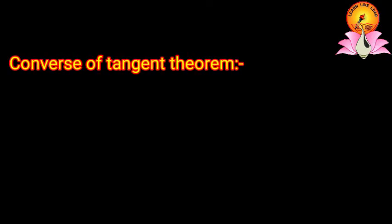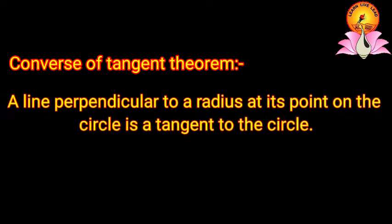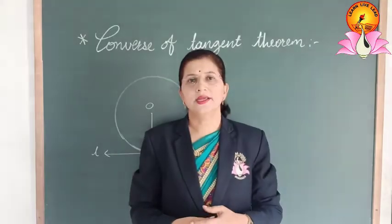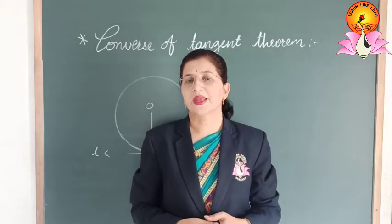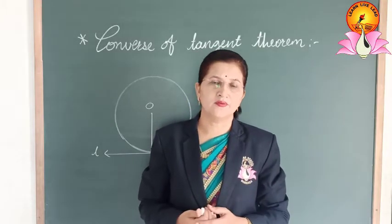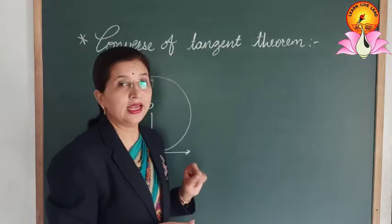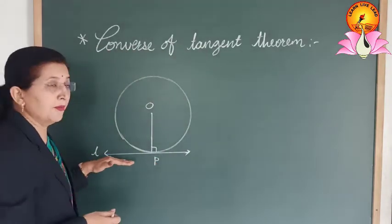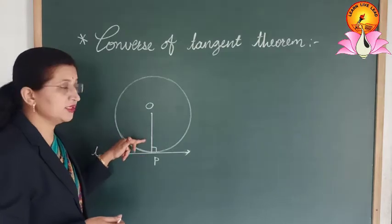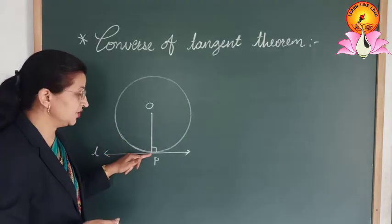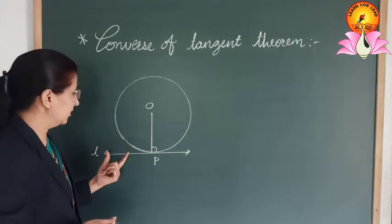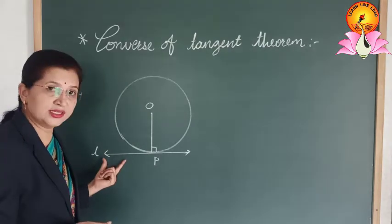Converse of Tangent Theorem: A line perpendicular to a radius at its point on the circle is a tangent to the circle. According to the statement of the Converse of Tangent Theorem, if any line is perpendicular to the radius of a circle at the point of contact, then the line is a tangent to the circle.